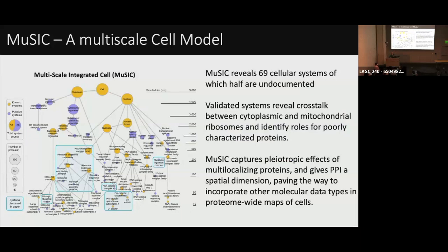This gives us a map we call MuSIC — Multi-Scale Integrated Cells. You can see the cell at the top, then nucleus and cytoplasm, then smaller and smaller compartments all the way to tight interaction complexes at the bottom. Think of it as data-driven gene ontology cell component rather than man-made. All the purple systems were new — not represented in gene ontology — and most that we looked into in detail could be validated. The power comes from the model capturing pleiotropic effects of multi-localization from the images and giving that dimension to the protein-protein interactions.